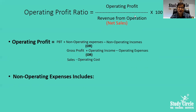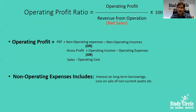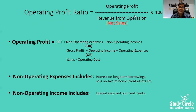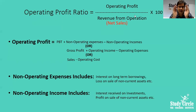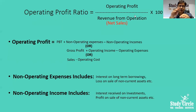To clarify: non-operating expenses include interest on long-term loans, loss on sale of current assets, etc. Non-operating income includes interest on investment, profit on sale of non-current assets, etc. In short, operating profit is calculated before interest and tax; non-operating expenses are added back and non-operating income is subtracted.